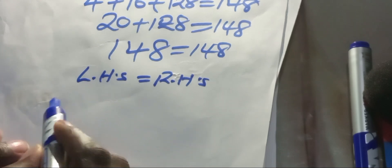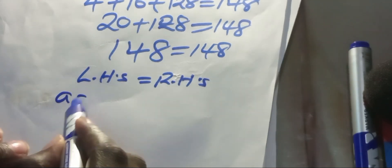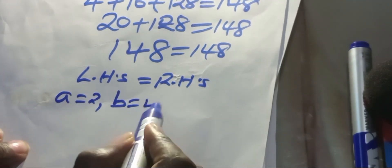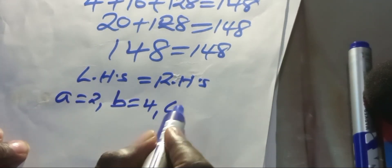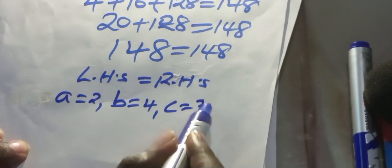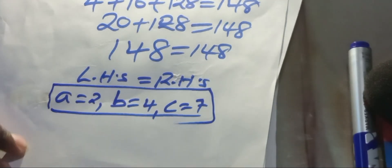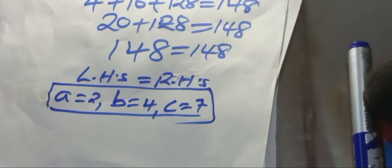That confirms that the values A equals 2, B equals 4, and C equals 7 actually satisfy the equation. Thank you for watching! Please like this video, comment and subscribe. See you in the next video. Bye-bye!